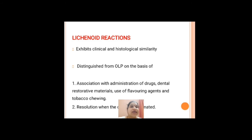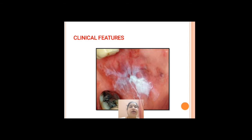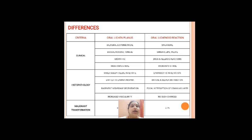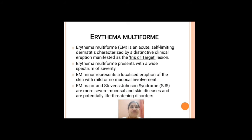There is a condition called lichenoid reaction. Unlike lichen planus, which has no specific etiology, lichenoid reaction occurs after administration of some drugs, dental restorations, tobacco chewing, or similar triggers. It appears clinically similar to lichen planus, but lichenoid reactions are not bilateral — only lichen planus is bilateral. Histologically, lichen planus shows a sub-epithelial lymphocytic infiltrate, whereas lichenoid reaction shows a diffuse inflammatory infiltrate.